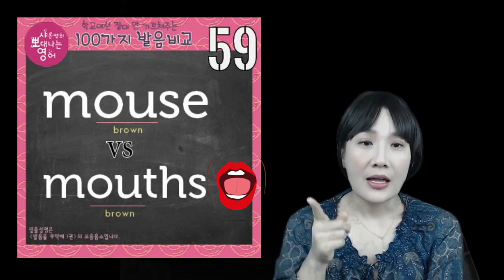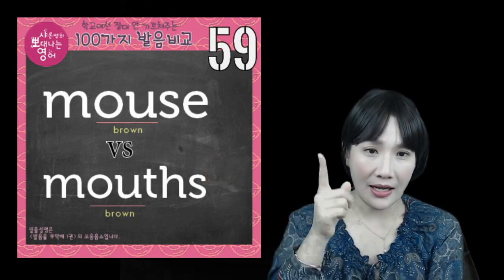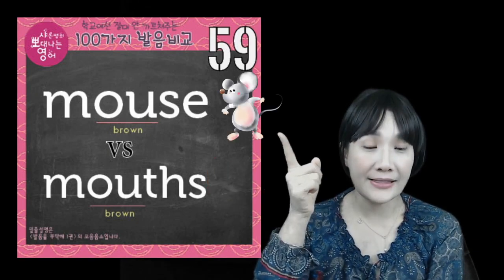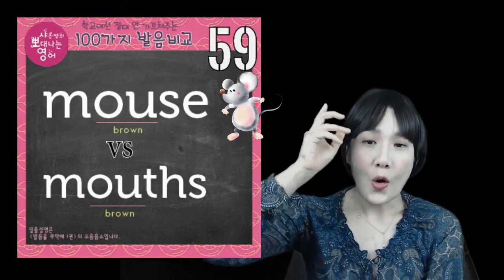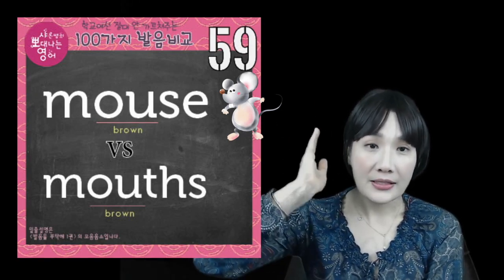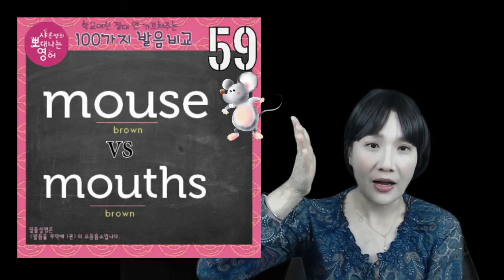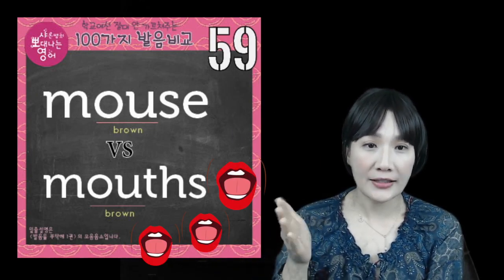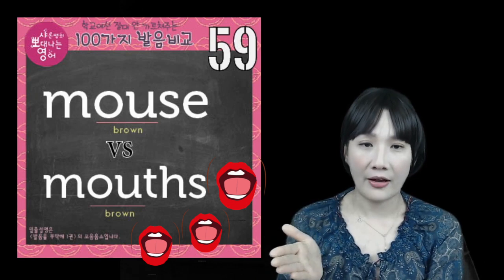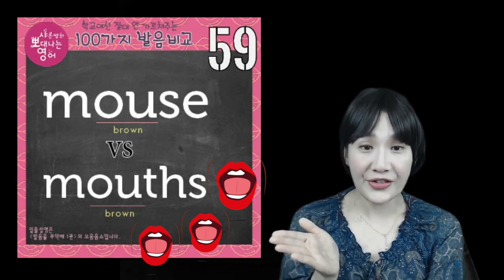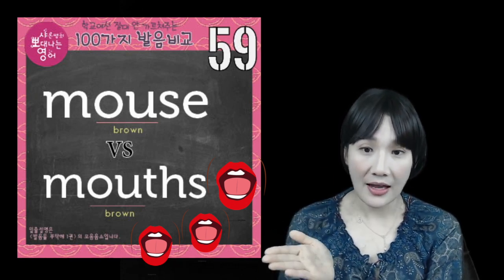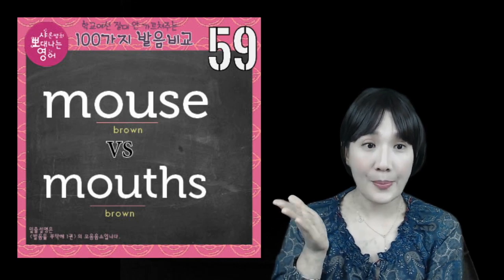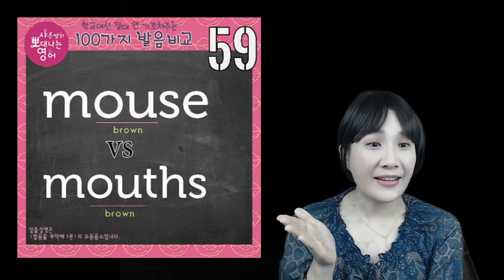z로 해도 되는데, mouse. 다시 mouse 하면서 빨리 끊어야 돼요, 왜냐면 무성음이에요. mouse. 그리고 얘는 유성처럼 처리하시면 더 알아듣기 편해요. mouse. 이렇게요. mouse 해도 되고요, mouse 해도 괜찮아요. 한번 인식해 보세요.